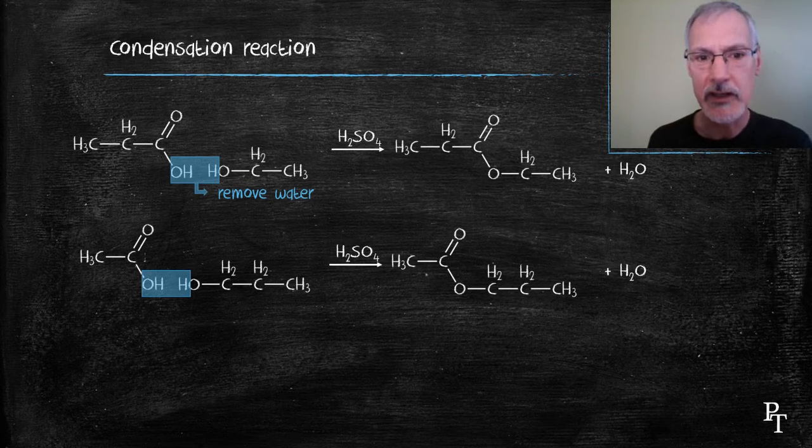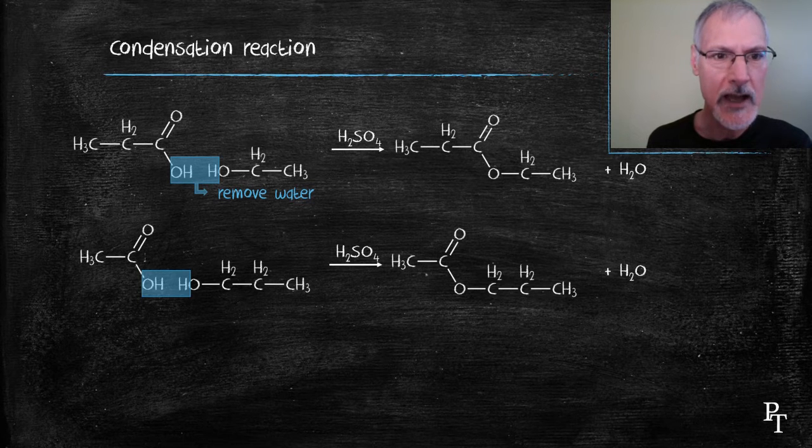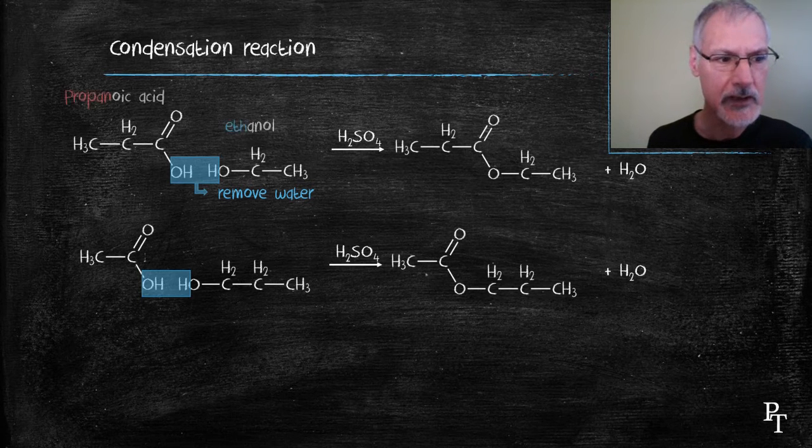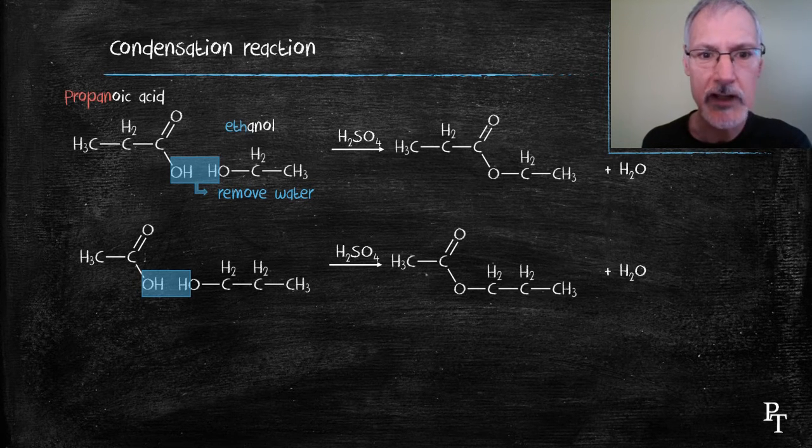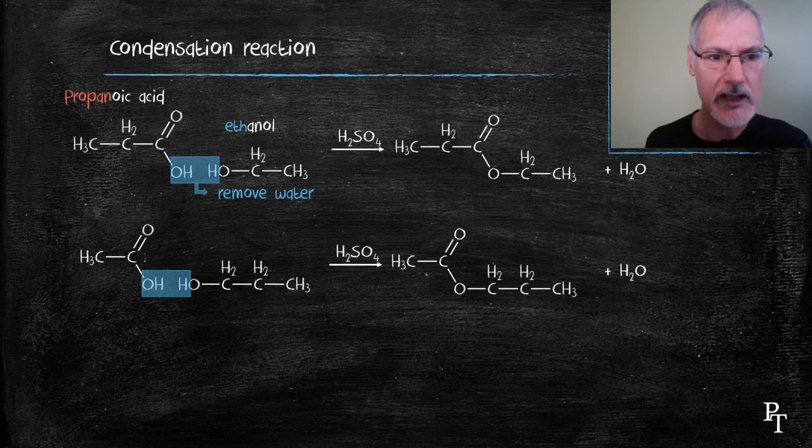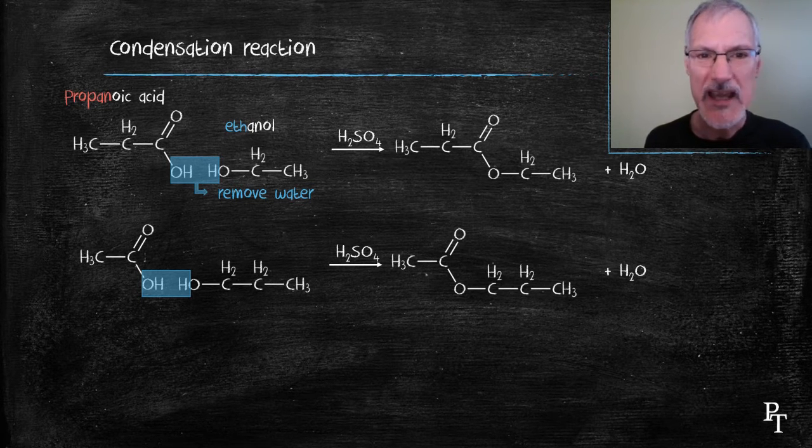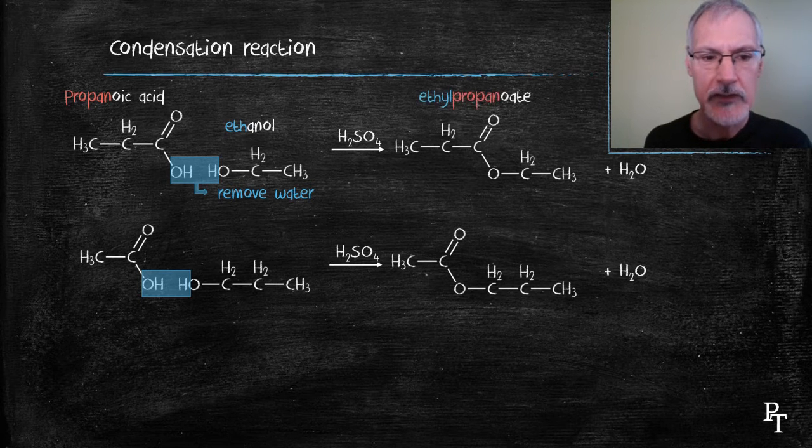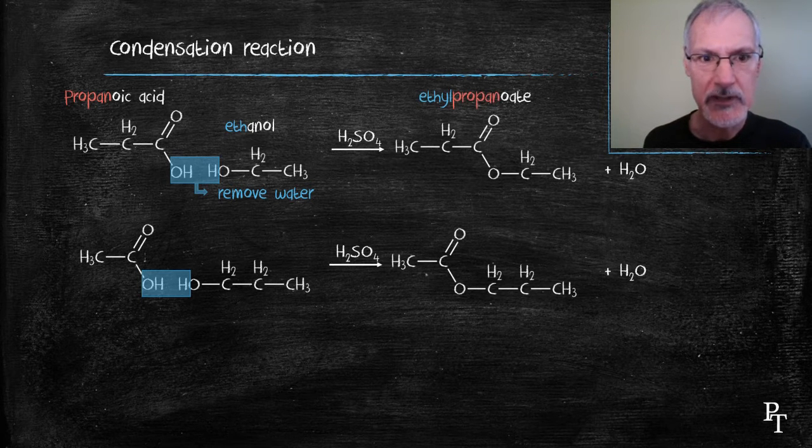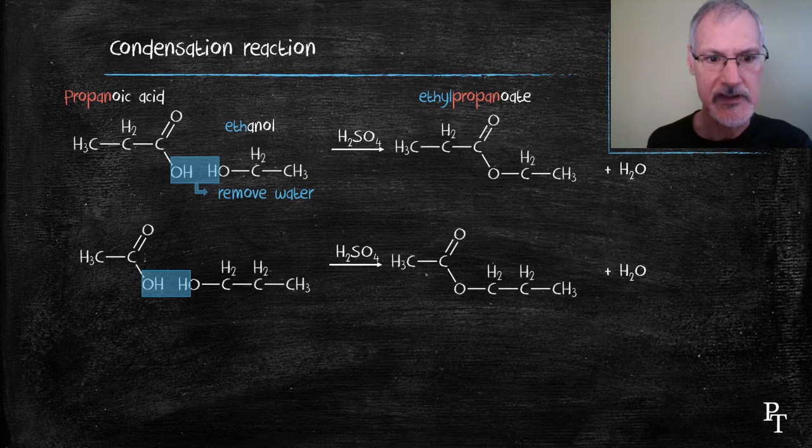If we look briefly at the naming of these ester groups, we need to go back to their starting materials. So in the first molecule, I have a three carbon acid, propanoic acid and ethanol. When I'm naming an ester group, I put oate at the end of the name. So what comes before the oate name is the name of the acid that's used. In this case, propanoic acid forms propanoate.